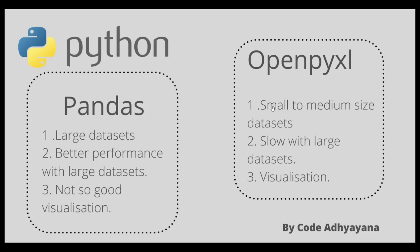On the other hand, if the dataset is small to medium and we are more focused on Excel features and formatting, then openpyxl would be our default choice. With openpyxl, we can create graphs, add images, and do all sorts of formatting like adding colors. We will see these things in upcoming videos. Thanks.